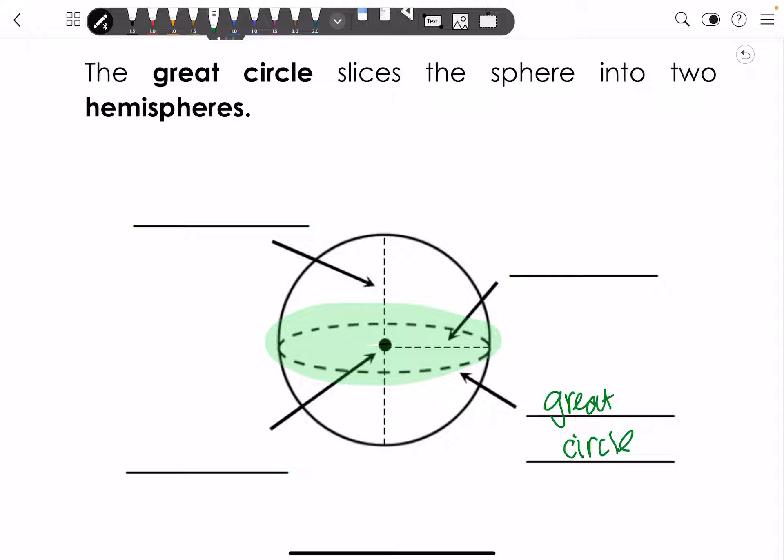And then everything else is just the normal things. So this line right here going all the way down and across is going to be your diameter.